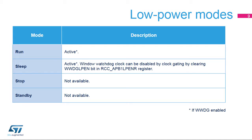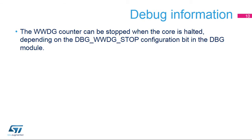The window watchdog is active in run and sleep modes. It is not available in stop or standby modes. In sleep and low-power sleep modes, the window watchdog clock can be disabled by clock gating by clearing the WWDG_LP_EN bit in the RCC_APB1_LPENR register. When the microcontroller enters debug mode with the core halted, the window watchdog counter either continues to work normally or stops, depending on the DBG_WWDG_STOP configuration bit in the DBG module.